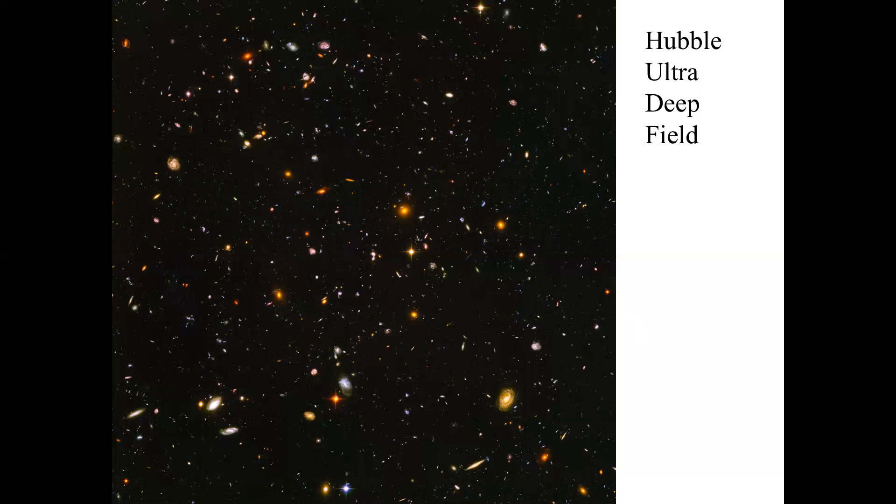You can see in one image how galaxies have evolved from the early universe to today. And so that's one of the cool things about the Hubble Ultra Deep Field—you can chart the evolution of galaxies in a single image. If you recall, the further away you look, the further back in time you look.